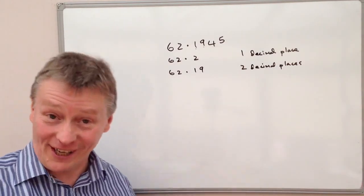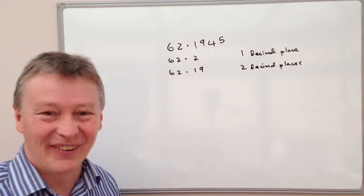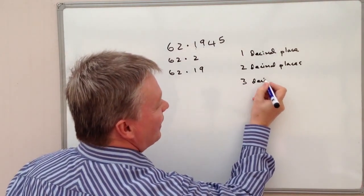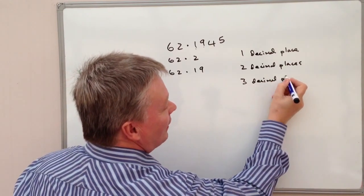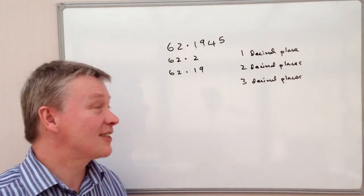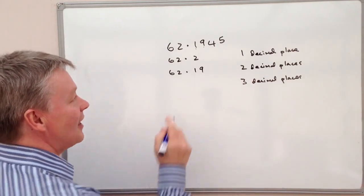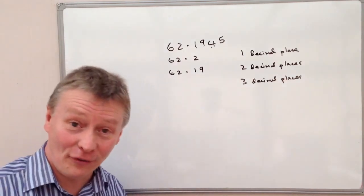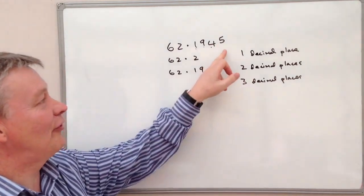So three decimal places. So I'll have a look at that one. So we've got three decimal places again for the same number. And I look at the third decimal place along, which in this case is a four. Then I look at the fourth one. The fourth one is a five.